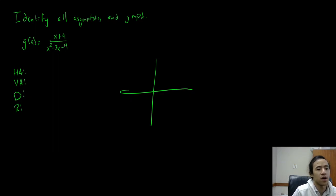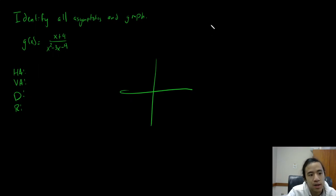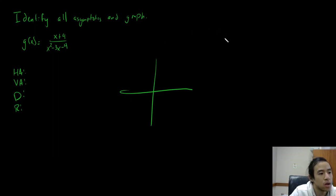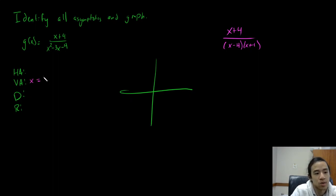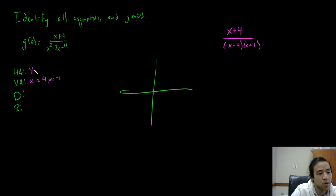Let's go ahead and identify all the asymptotes first by factoring everything. I'm going to show my work over here to the right. We have x plus 4 on top, and on the bottom we have x minus 4 and x plus 1. So the vertical asymptotes will be at x equals 4 and x equals negative 1. For the horizontal asymptote, we have a 'bobo' — it's bigger on the bottom — so we have a horizontal asymptote at y equals 0.